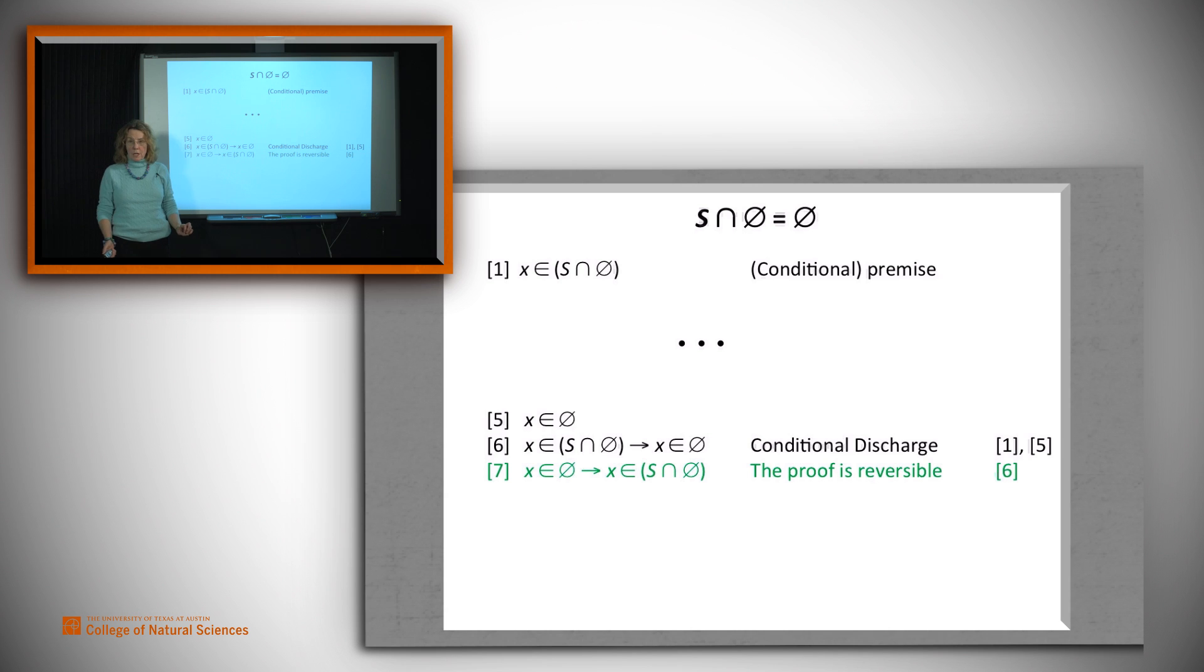Now suppose we can argue that the proof that we just did is reversible. And I've written this in green because we can't, in fact, argue that we haven't seen the proof yet. But imagine that we can. Then we don't have to write a second proof that x being in the empty set implies that it's also in x intersect the empty set. We know that.